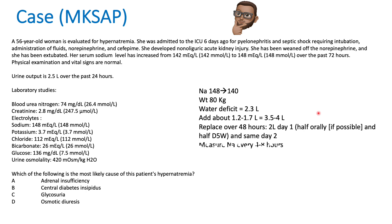Most importantly, measure the serum sodium serially to make sure you're not overcorrecting, and to make sure you're not under-correcting either. You don't want persistent hypernatremia, as it's associated with worse outcomes — just like overcorrection. This is a summary of how to replace water in hypernatremia. Thank you very much and see you in the next video.